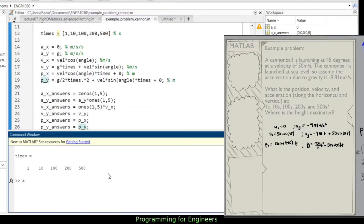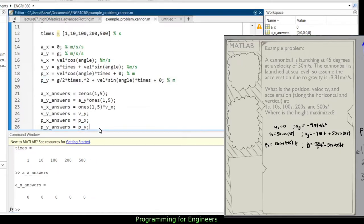Now I can pull up ax answers, and I get the answer for each of these times: one second, 10, 100, 200, 500. So there we go, we're able to calculate that.